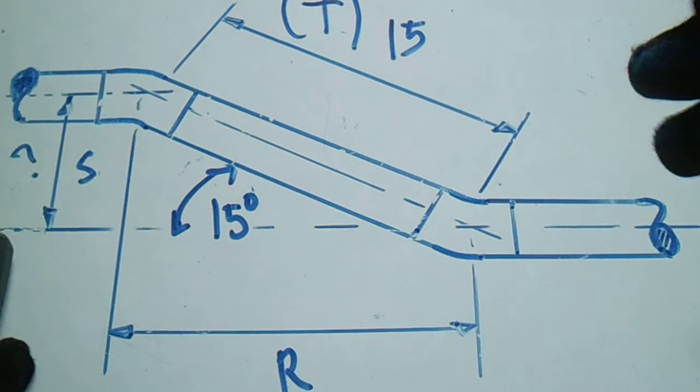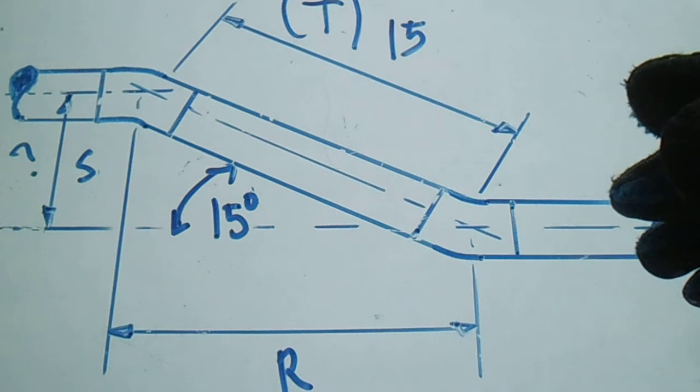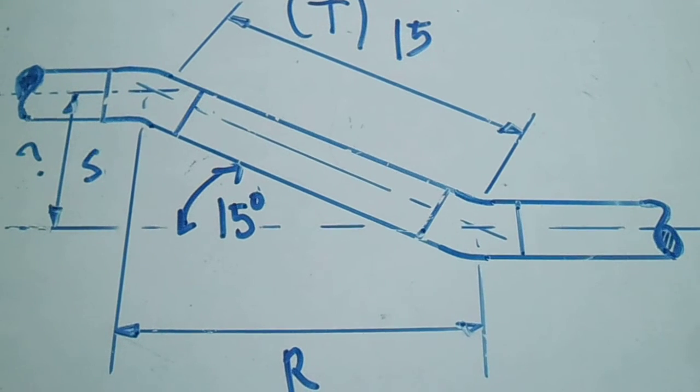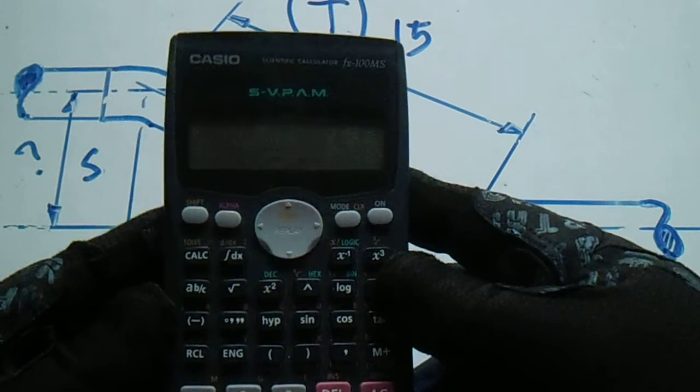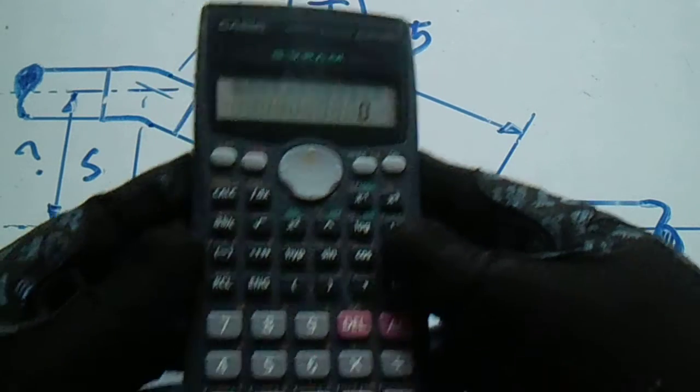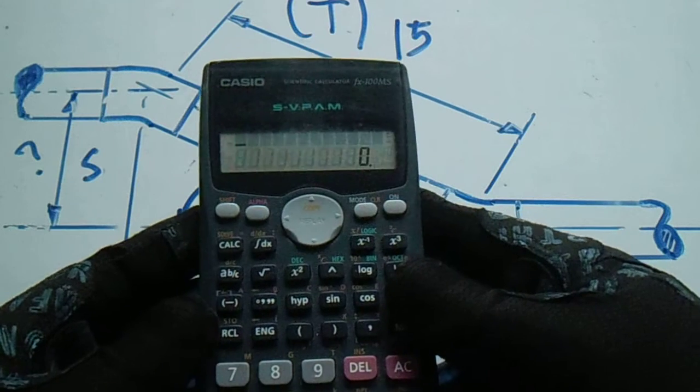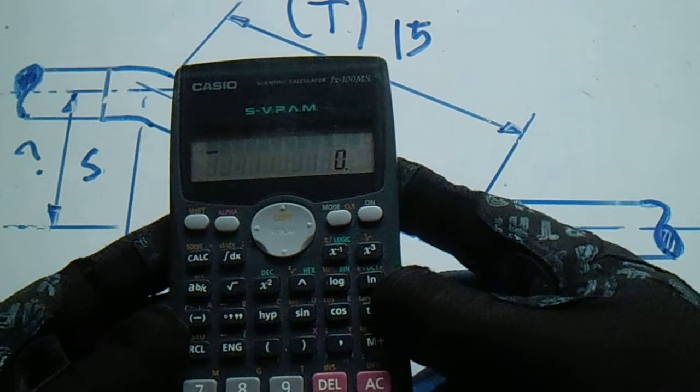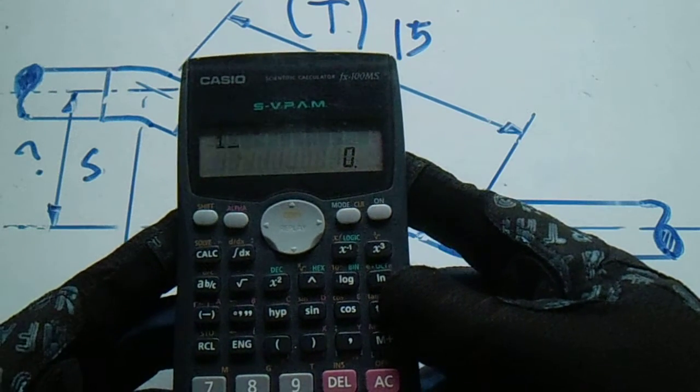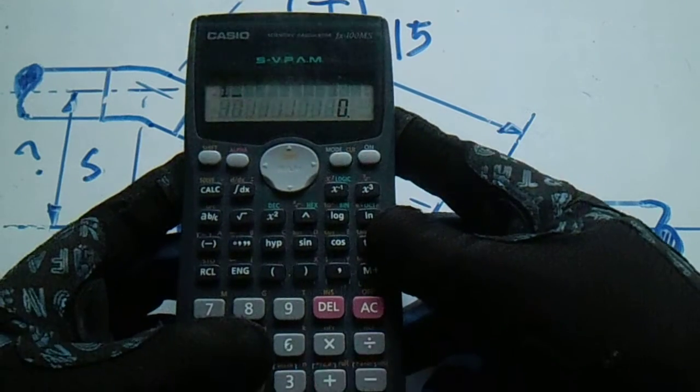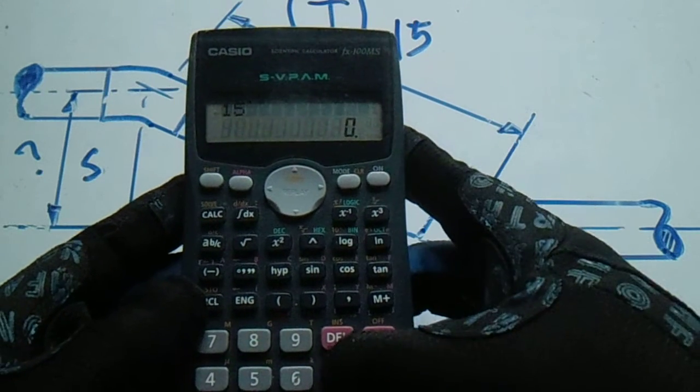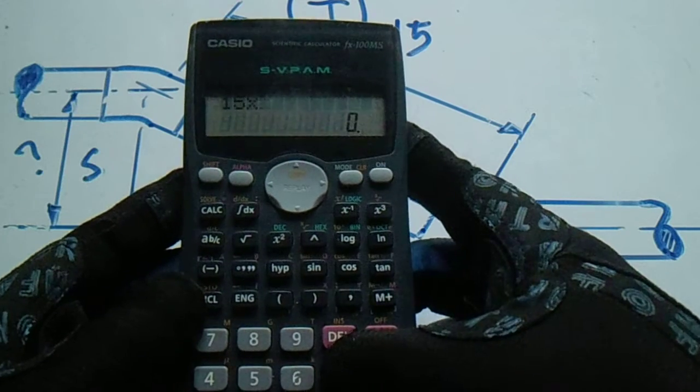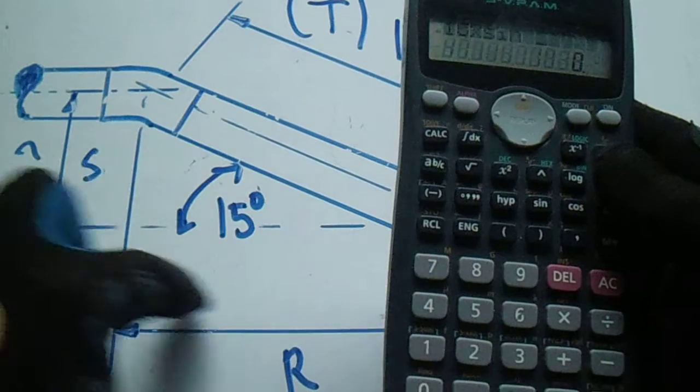Set equals travel multiply it to sine. I will show you in a calculator using this fx100ms. So to get that, 15 is our travel, so 15 multiply it to sine. We have a sine of this is 15 degrees.